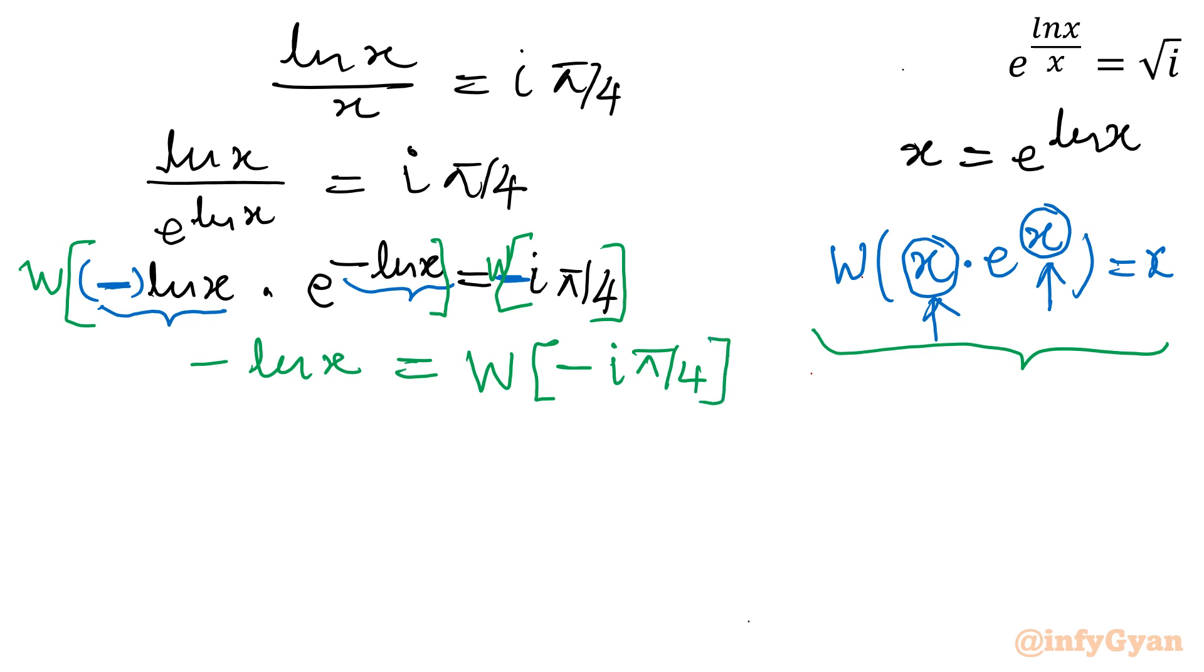Now multiply this equation by minus sign. I will get ln x is equal to minus Lambert W function of minus i pi by 4. Write in exponential form I can write x is equal to e raised to the power minus i pi by 4.